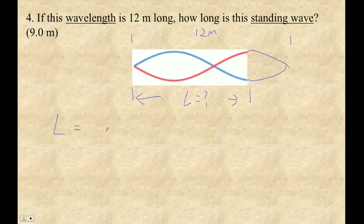So the length of the standing wave is how many quarter wavelengths do we have here? One, two, three quarter wavelengths. Three quarters of the wavelength, and the wavelength is 12 meters long.